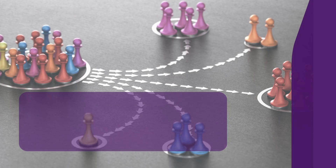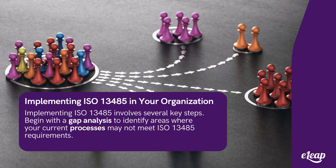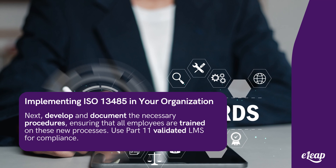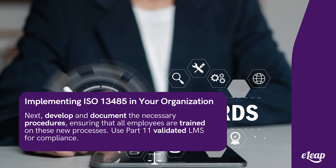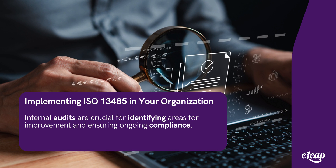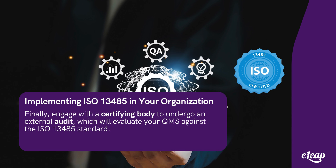Implementing ISO 13485 involves several key steps. Begin with a gap analysis to identify areas where your current processes may not meet ISO 13485 requirements. Next, develop and document the necessary procedures, ensuring that all employees are trained on these new processes. Internal audits are crucial for identifying areas for improvement and ensuring ongoing compliance. Finally, engage with a certifying body to undergo an external audit, which will evaluate your QMS against the ISO 13485 standard.